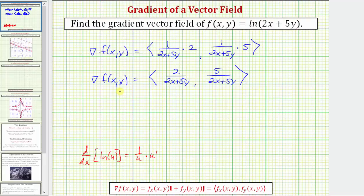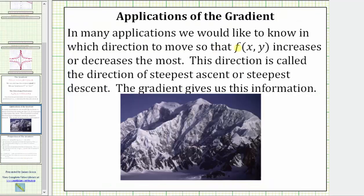Now let's talk about what the gradient vector field tells us about f(x, y). In many applications, we would like to know in what direction to move so that f(x, y) increases or decreases the most. This direction is called the direction of steepest ascent or steepest descent, and the gradient gives us this information. The gradient at any point (x, y) on the surface points in the direction of steepest ascent, or largest increase, and the opposite of the gradient gives the direction of largest decrease. It's also true that the gradient will be orthogonal or perpendicular to the level curves of the surface.